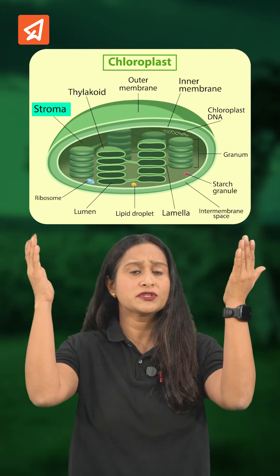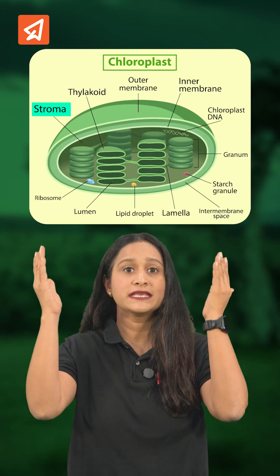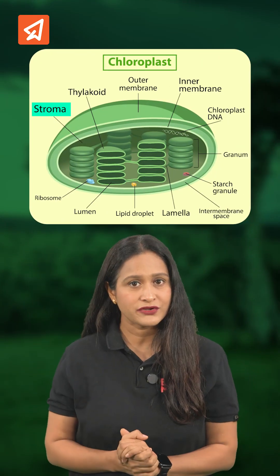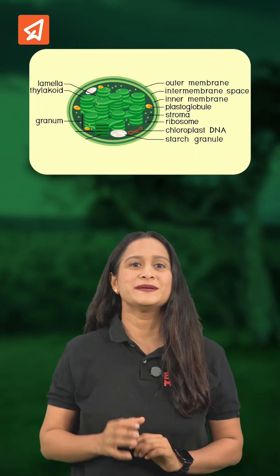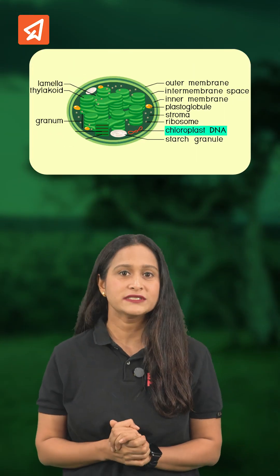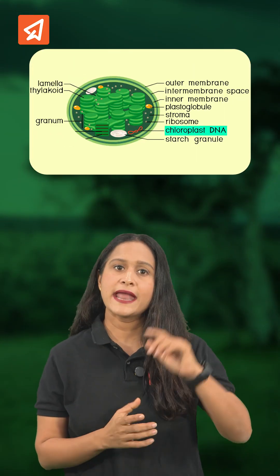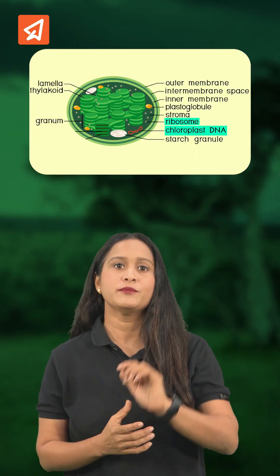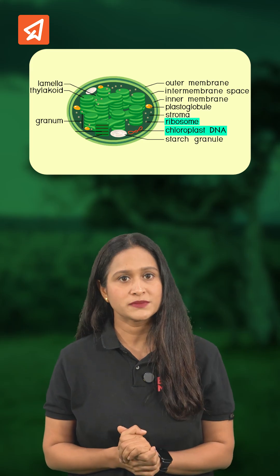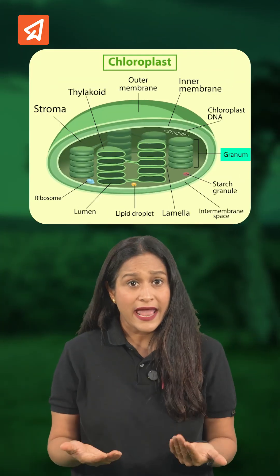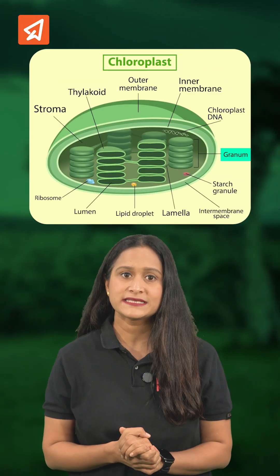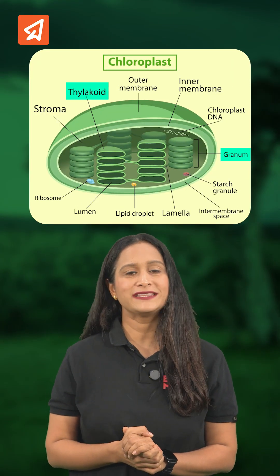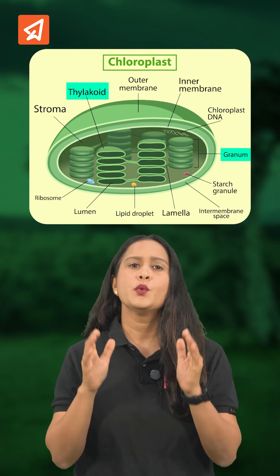Stroma contains enzymes required for the synthesis of carbohydrates and proteins. It also contains small double-stranded circular DNA and 70S type of ribosomes. While grana is made up of flattened membranous sacs called thylakoids,